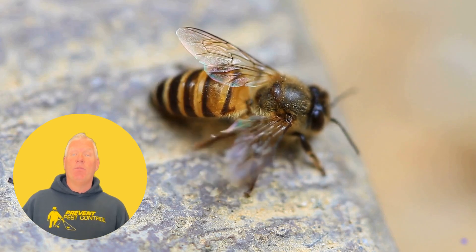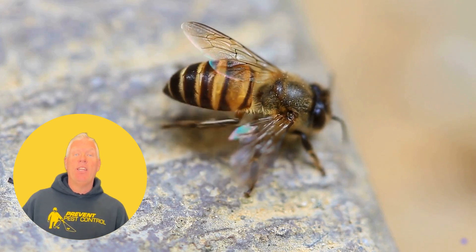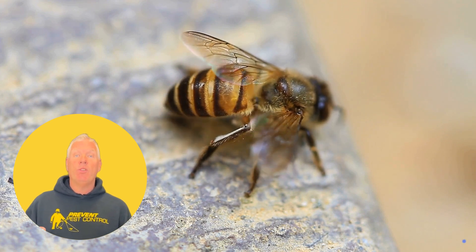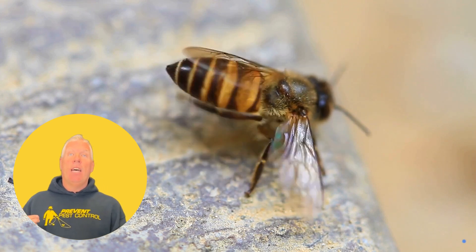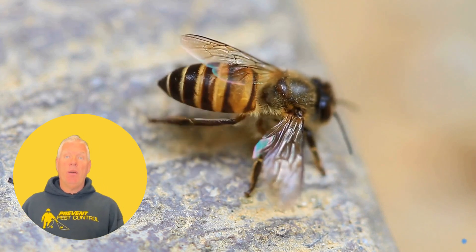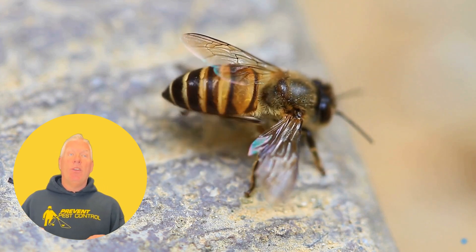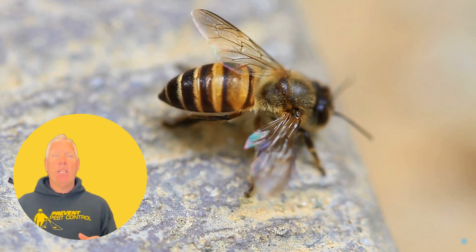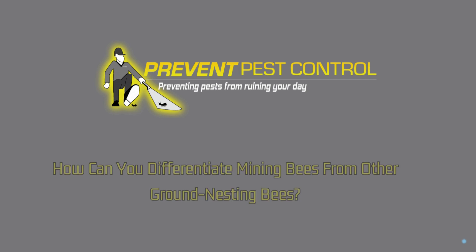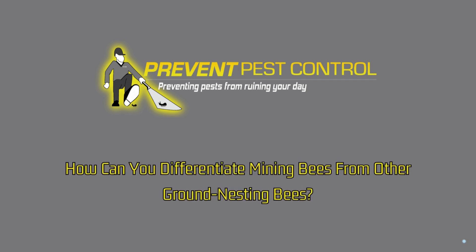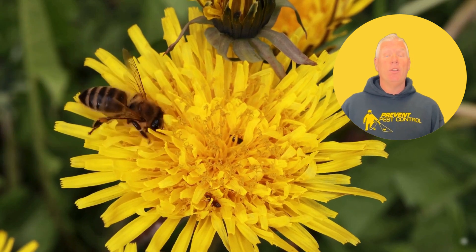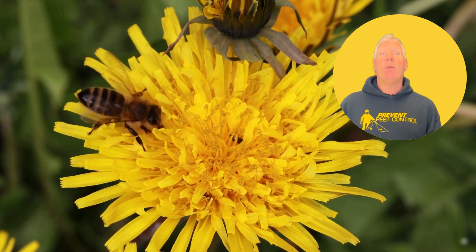What is distinctive about digger bees? Digger bees get their name from their nesting habits — they excavate tunnels in the ground to create their nests. These bees are usually solitary and can be identified by their burrowing behavior and the small mounds of soil they leave at the entrance of their nests.